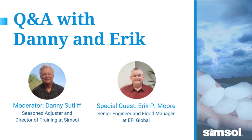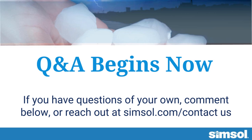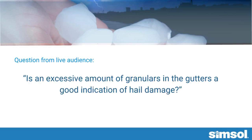Question from a user: Is an excessive amount of granules in the gutter a good indication of damage? Granules are meant to be a wearing surface and come off over the roof's lifespan. Excessive granules in the gutter would indicate a roof with some age on it, or possibly a slope issue with the gutter causing slow flow and debris settling. It's not an indication of any kind of damage.